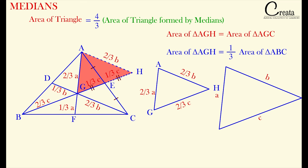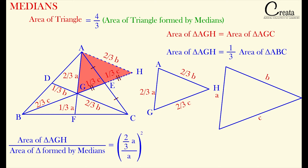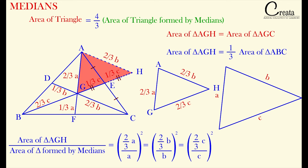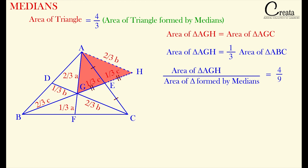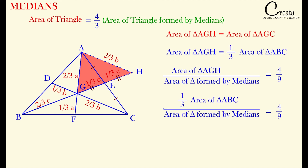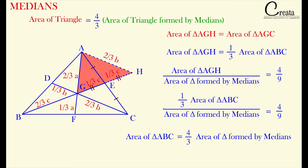Both of these triangles are similar. So we can say area of triangle AGH upon area of triangle formed by the median is equal to (2 by 3 A upon A) whole square, which is further equal to (2 by 3 upon B) whole square, which is further equal to (2 by 3 C upon C) whole square. That is, area of triangle AGH upon area of triangle formed by the median is equal to (2 by 3) whole square, that is 4 by 9. And we have proved area of triangle AGH is equal to 1 by 3 times area of triangle ABC. On substituting and solving, we get area of triangle ABC is equal to 4 by 3 times area of triangle formed by the medians. This is the proof of the concept.